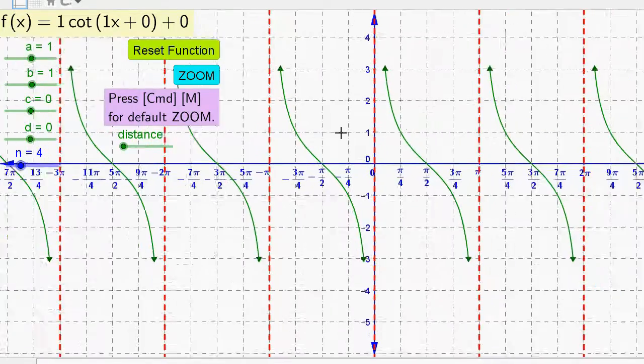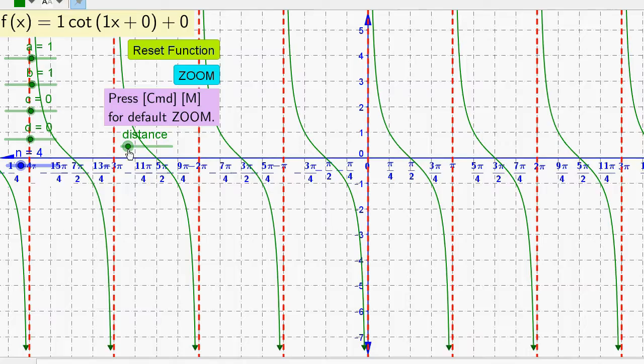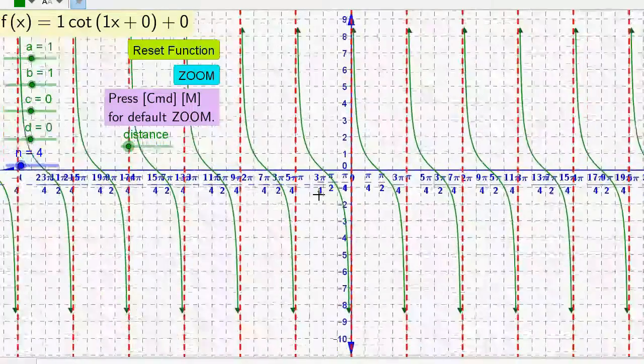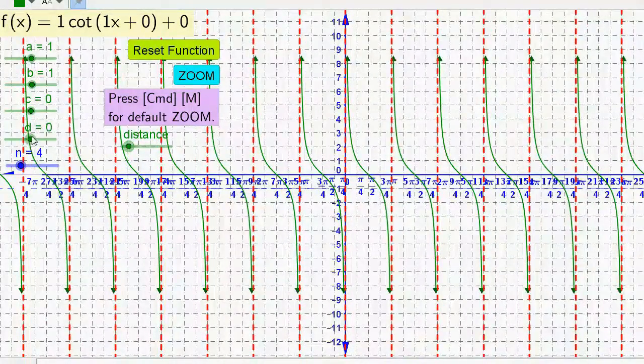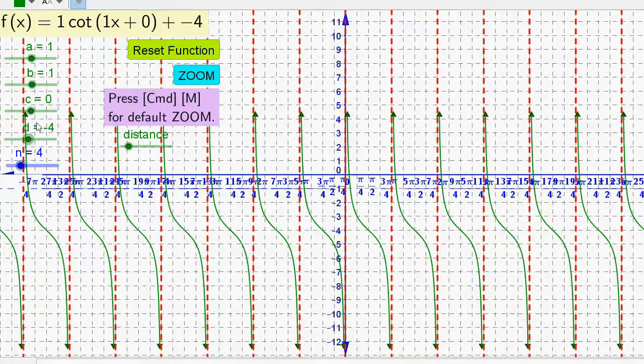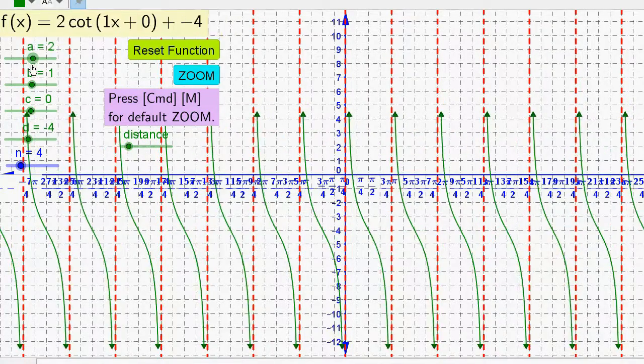Let me just zoom out a little bit, and let me increase the distance to show you that it will hug the asymptote, and it will go on. I can move it up and down and reflect along the line y equals d.